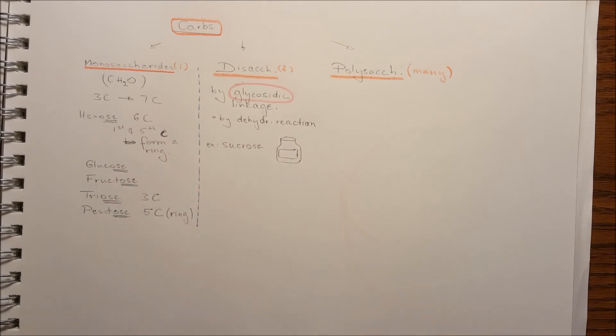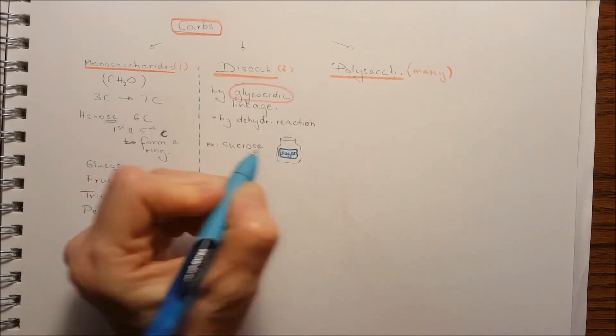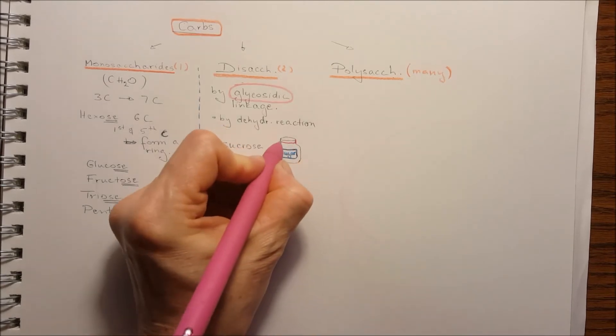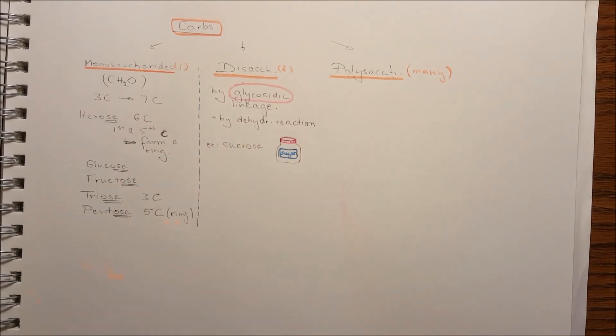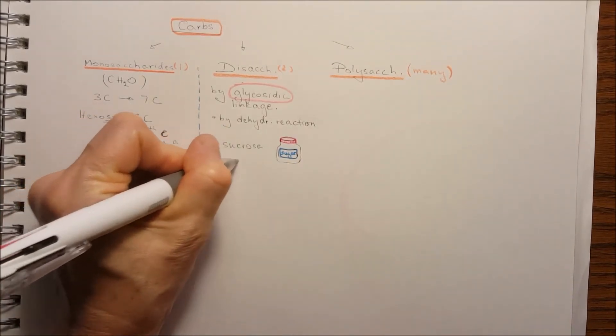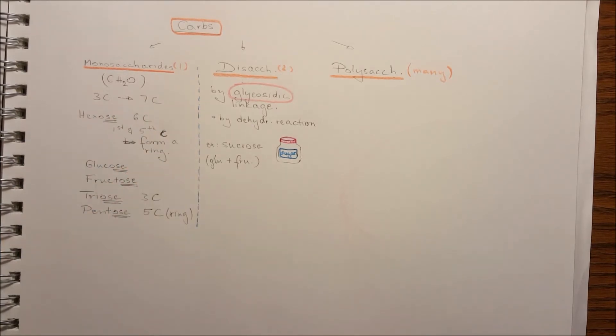One of them is the sucrose. The sucrose is really glucose and fructose combined together. This is the plain sugar what we eat and it's usually in plants.